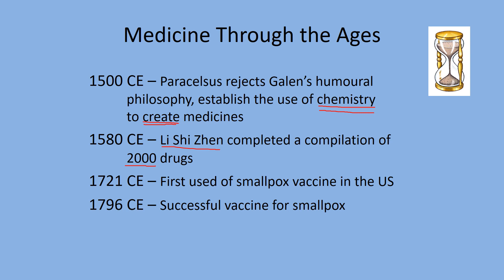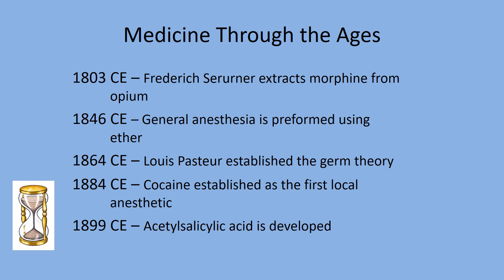Regarding the smallpox vaccine: using good observation, a strategy for preventing smallpox was used in China. They found that those infected with cowpox had a much better survival rate than those with smallpox, and if you survived cowpox, you would never get smallpox. So what they did was dry up the lesions from people with cowpox, pulverize them, and have patients snort the material to expose them to the antigen.